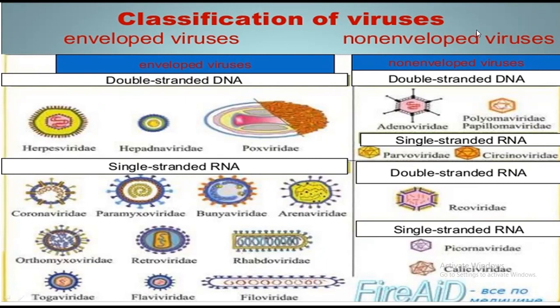The entry of enveloped viruses and non-enveloped viruses is a bit different. Enveloped viruses consist of an outer covering membrane — basically a plasma membrane taken from the host cell. Naked viruses, or non-enveloped viruses, do not consist of a plasma membrane as an outer covering. In this video I will discuss how enveloped viruses and non-enveloped viruses each enter a cell.